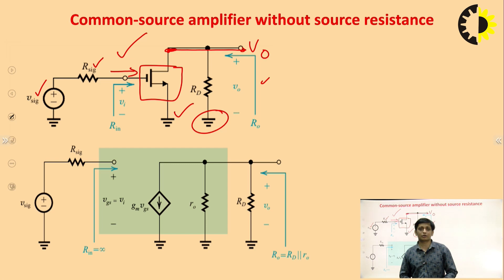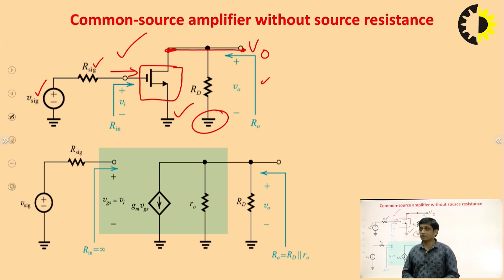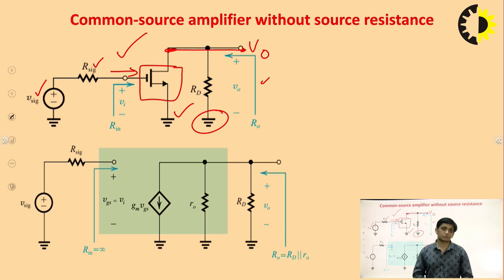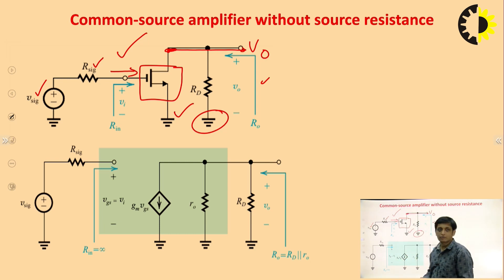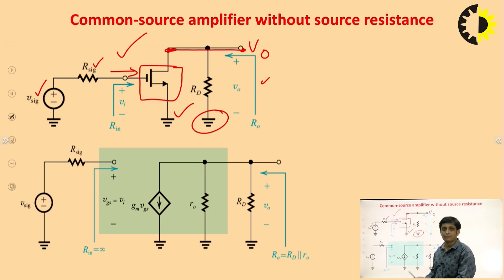The small signal model can be drawn in two ways: one is the hybrid pi model and the other is the T model. Which model will we prefer? If there is no resistor connected at the source terminal — as in this case — it is convenient to use the hybrid pi model. But when we study the common source amplifier with source resistance, there is a resistor at the source terminal, so the T model will be convenient. In this case, the hybrid pi model is preferred.